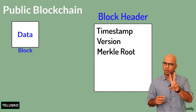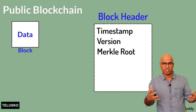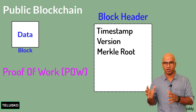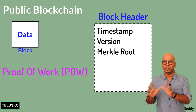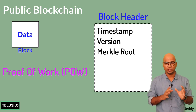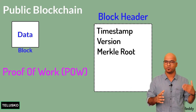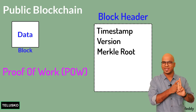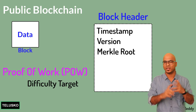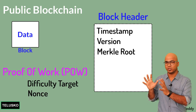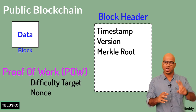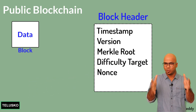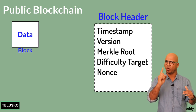We need two more fields related to the proof of work algorithm used in public blockchains: the difficulty target and the nonce. We'll discuss these in detail when we cover proof of work. So in total, the block header has five fields: timestamp, version, Merkle root, difficulty target, and nonce.